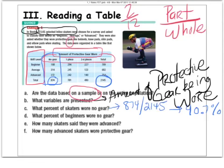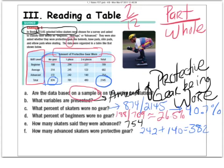I want you to pause the video and try to do parts D, E, and F on your own. Play the video, check the answers. Go ahead and do it. Pause the video. Okay. The three respective answers you should have gotten. What percent of beginners wore no gear? About 26.5%. Part E, the answer was 754 people. Part F was 382 people. If you got those, go ahead and fast forward to the next slide. If not, listen up.